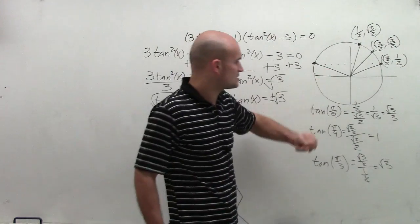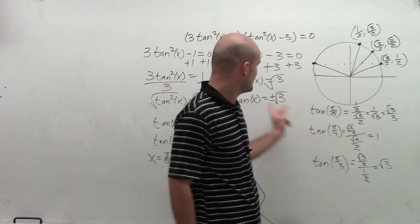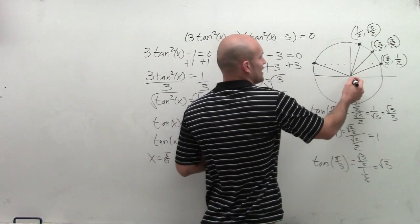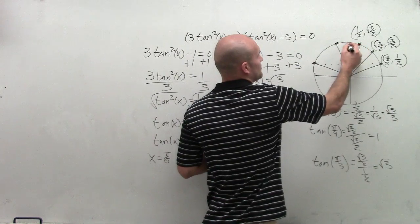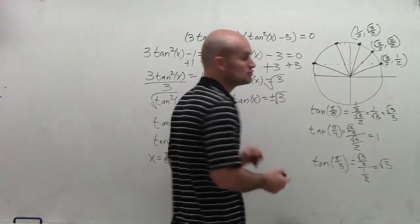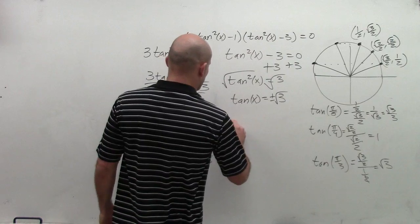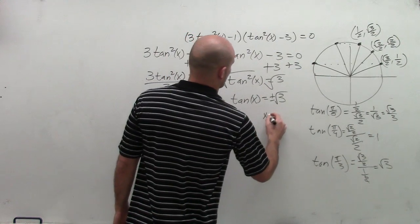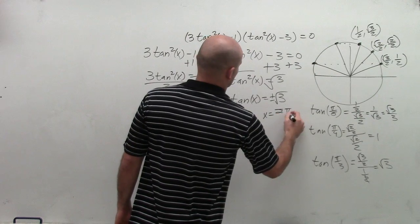Now, let's look at the next case solution. So at pi over 3, I have positive square root of 3, which is right here. The negative value would be, again, reflecting it over the y-axis, which would be 2 pi over 3. So now I have two solutions for here, which is x equals pi over 3 and x equals 2 pi over 3.